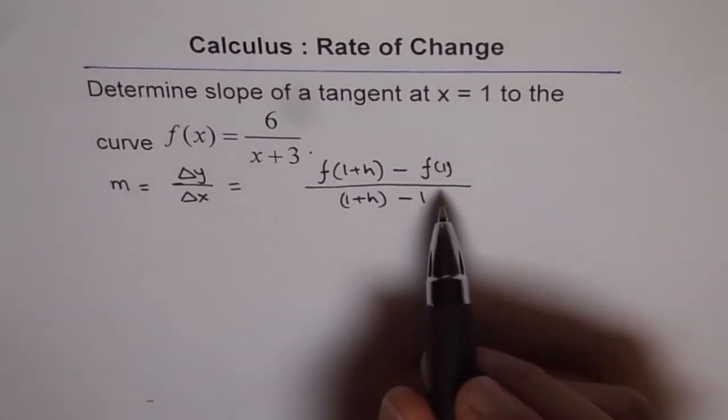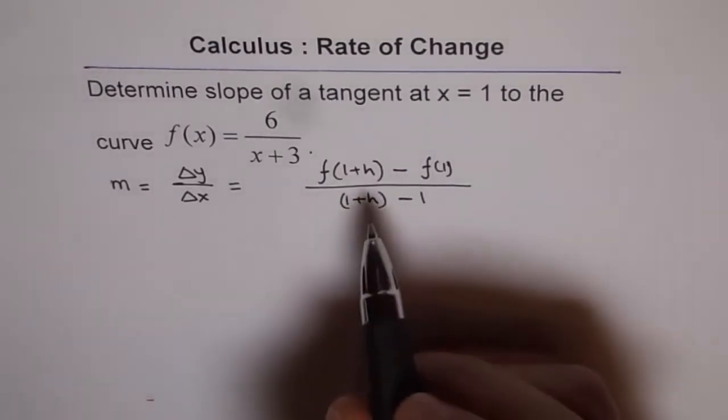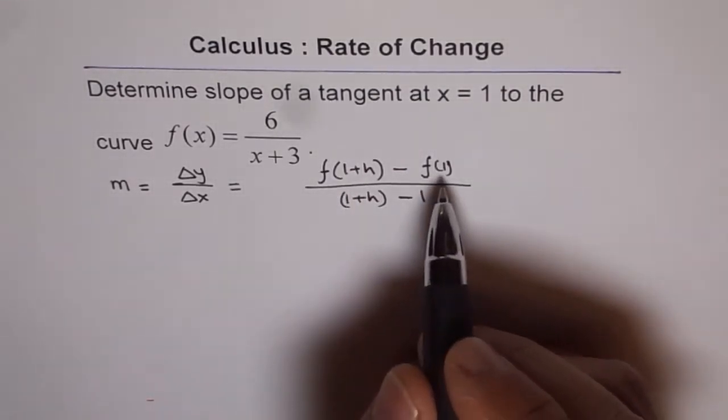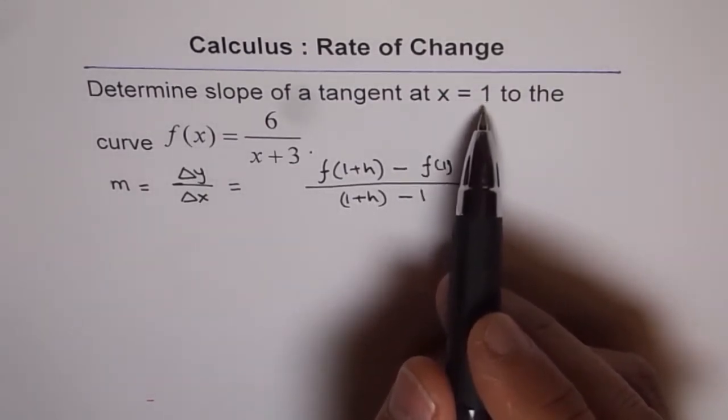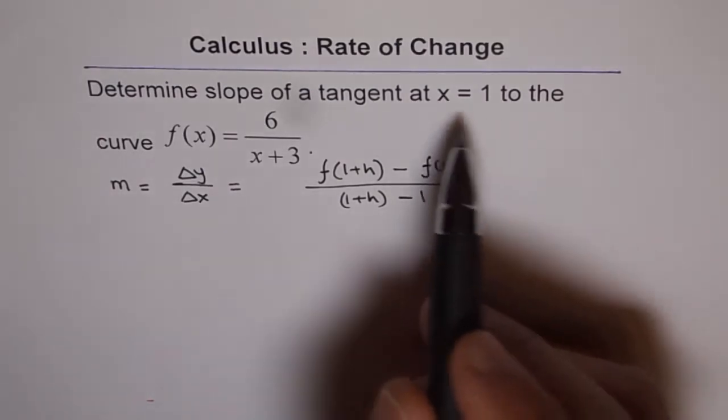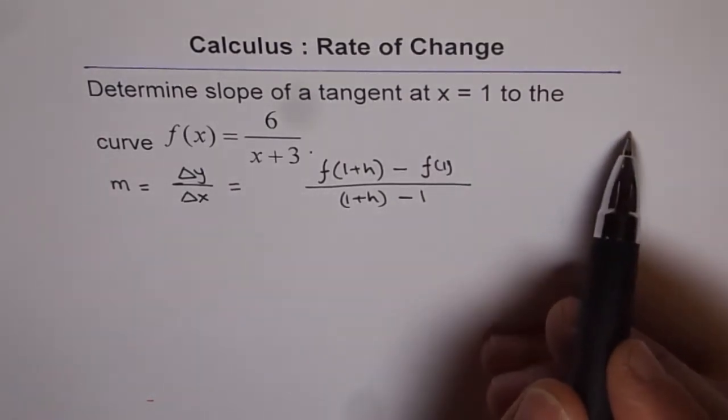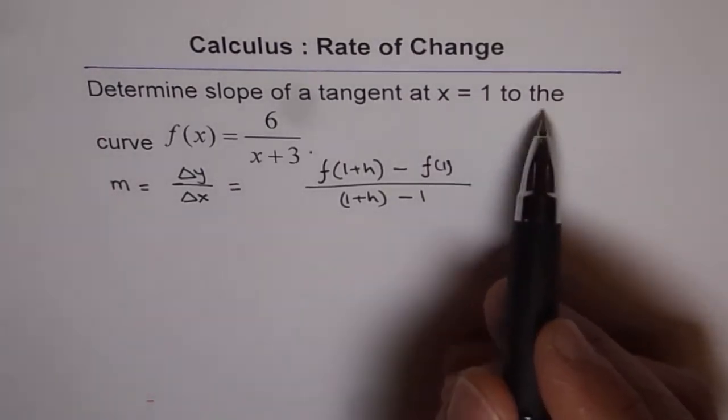So, what we are considering here are two set of points. 1 is at x = 1 and the other one is slightly away. Let's say this is P, the other one, Q, is slightly away, is at 1+h.